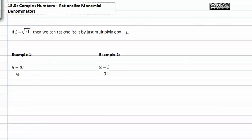In example one, we have five plus three i over four i. If you think about it, this isn't good because we have a radical in the denominator. Even though it's hidden underneath the i, it's kind of like having this.